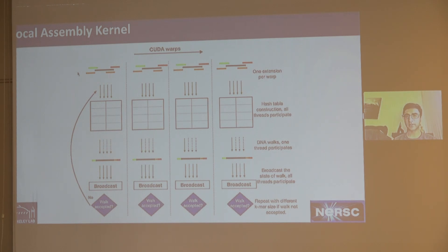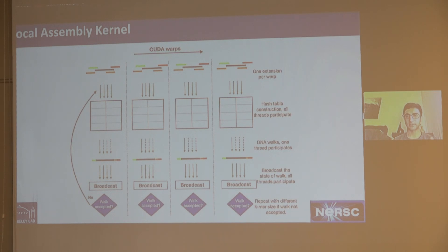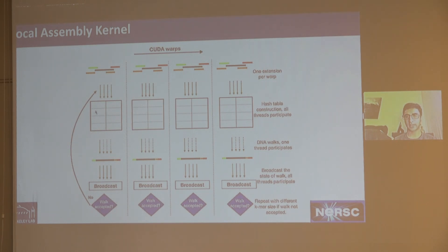Inside the local assembly kernel, the unit of parallelism is a warp, and we do one local assembly per block. We use warp-level parallelism because it's the right granularity: a full block would be too many resources for a small amount of work, and anything less than a warp creates thread count issues. Within a warp, communication is optimal using warp intrinsics — the fastest available. If you have to go inter-warp, you go through shared memory which is slower. Using a warp, we construct the k-mer hash table collaboratively, and then just one thread of the warp performs the graph traversal, since there's limited parallelism in that step.